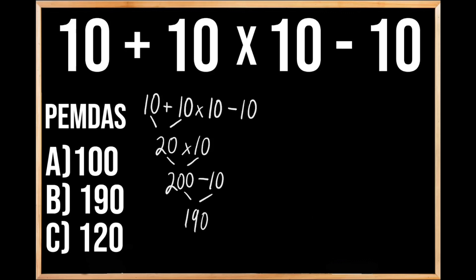So our answer should be B, 190. But if we work through the problem this way, then we would get the incorrect answer, because we didn't follow the order of operations.